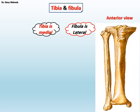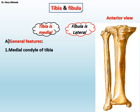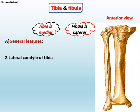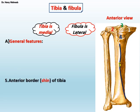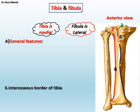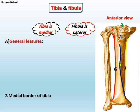General features of the tibia and fibula on the anterior view include: 1. Medial condyle of the tibia; 2. Lateral condyle of the tibia; 3. The intercondylar eminence from the superior aspect of the tibia; 4. The tibial tuberosity on the anterior aspect of the tibia; 5. The anterior border or shin of the tibia; 6. The interosseous border of the tibia, directed laterally towards the fibula; 7. The medial border of the tibia; 8. The medial malleolus at the lower end of the tibia.